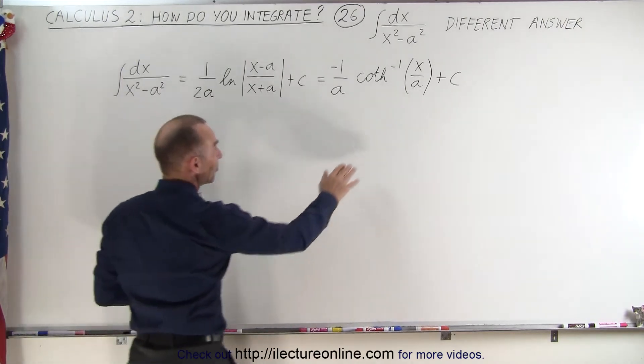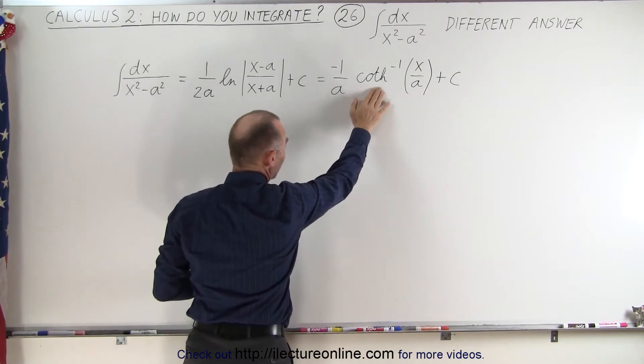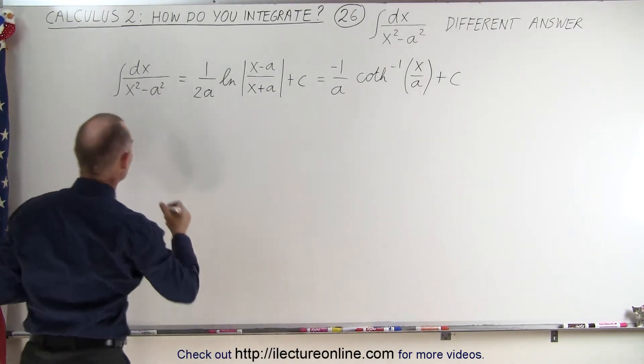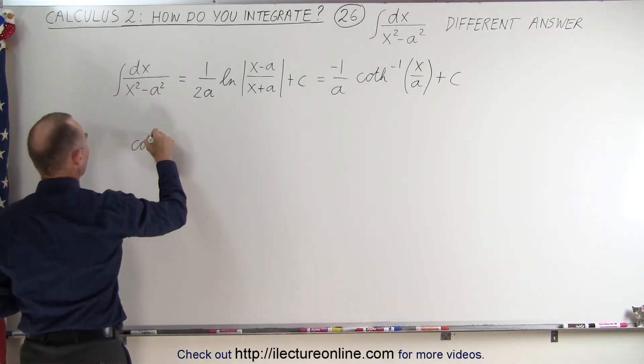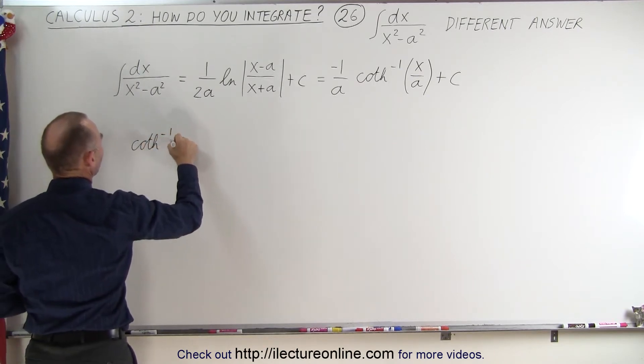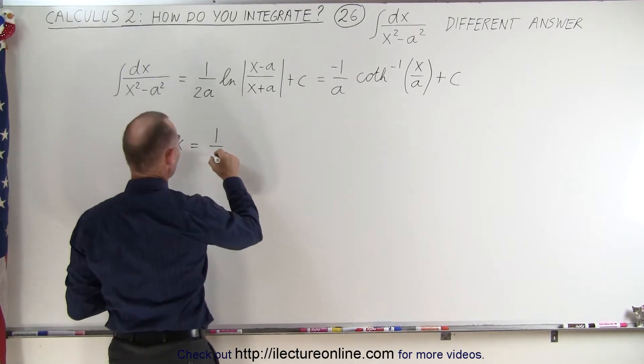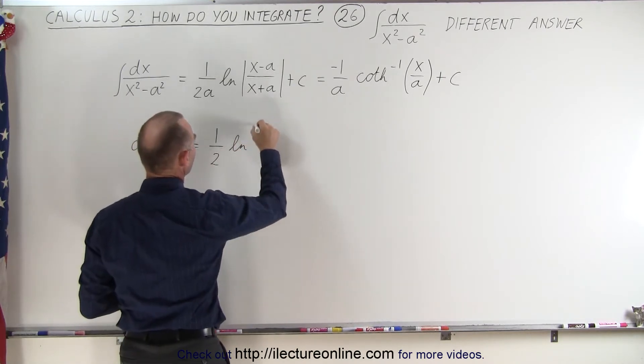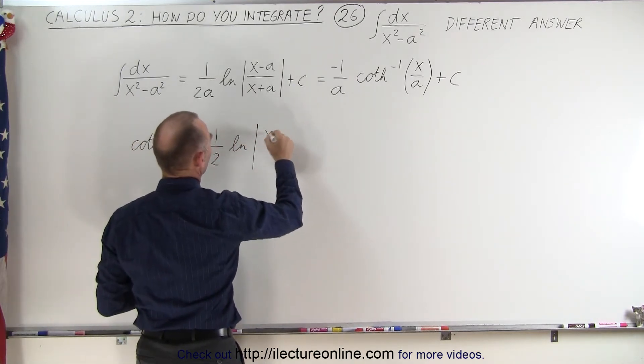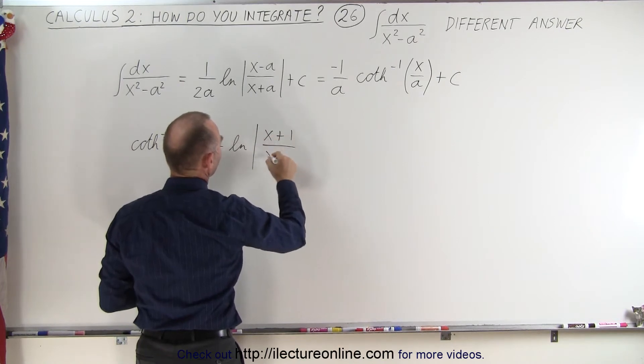So we need to find the definition of the inverse hyperbolic cotangent. It turns out that the inverse hyperbolic cotangent of x is equal to one over two times the natural log of x plus one divided by x minus one.